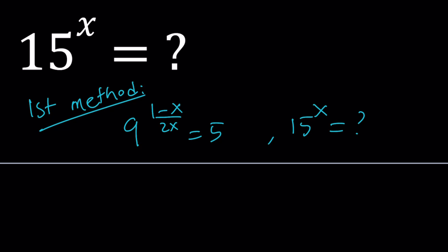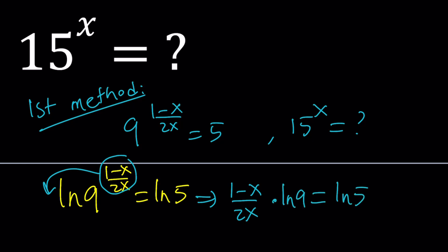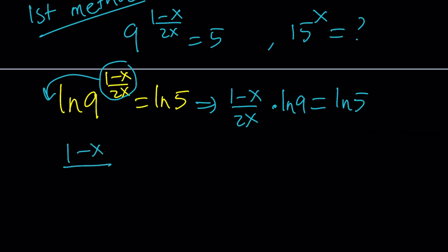Let's solve for x from the first equation. We need to bring down the exponent by using logs. Let's use natural logs. I'm going to ln both sides, and from here I can bring down the exponent. This gives me 1 minus x divided by 2x, multiply by ln 9 equals ln 5. ln is the natural log, by the way.